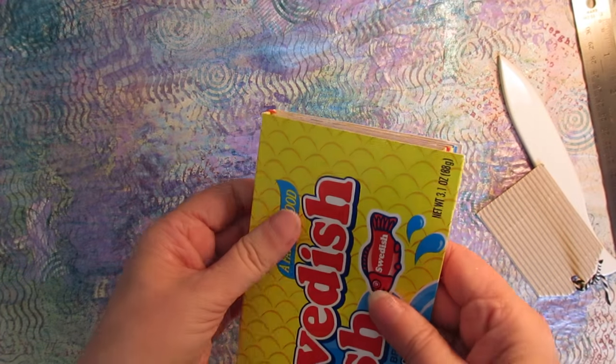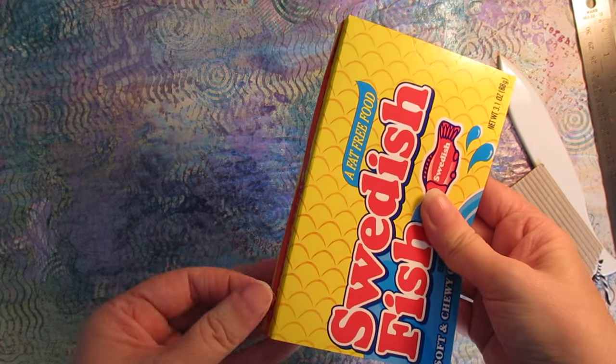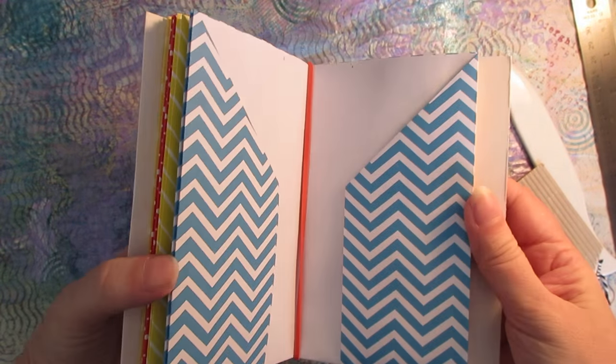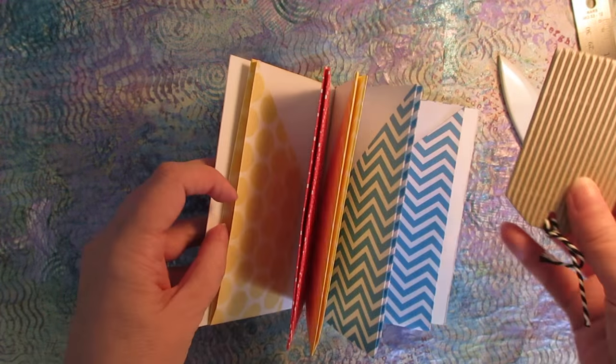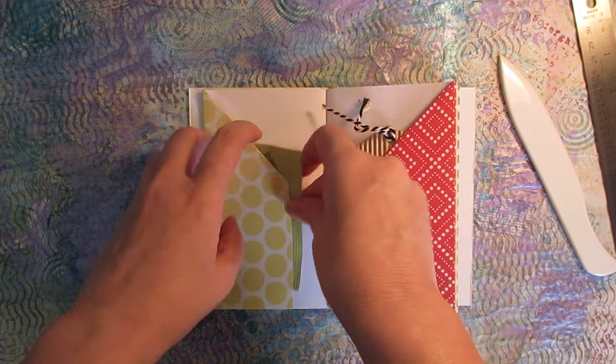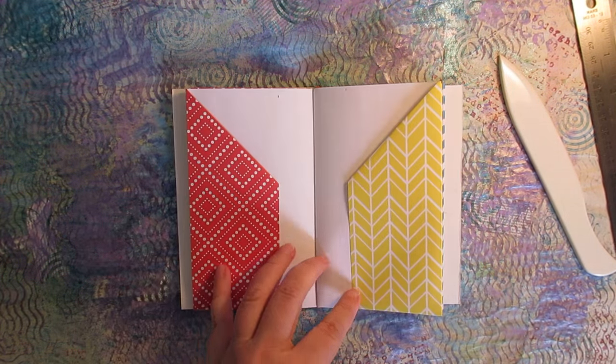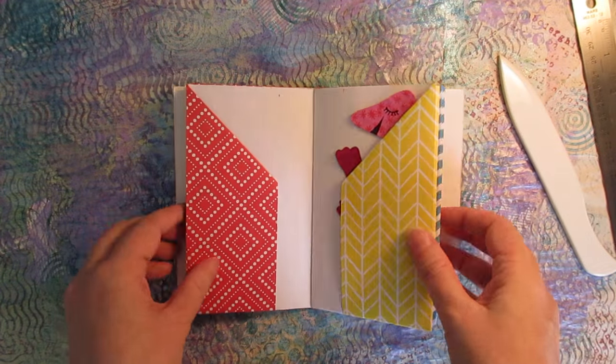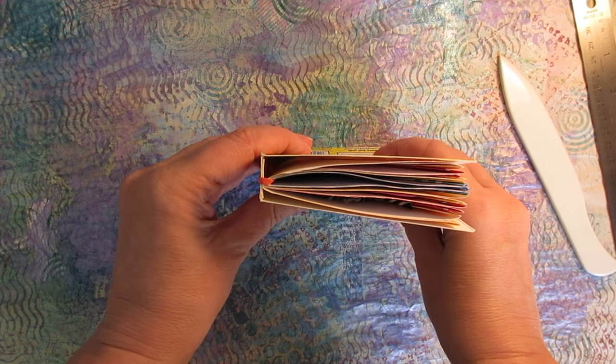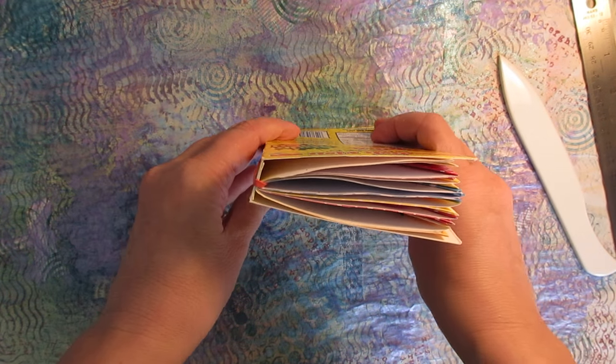And then what I have is a candy box book with all kinds of pages that I can put tags in, pictures in, paper dolls in, all kinds of stuff. Fast, easy, not too much fuss.